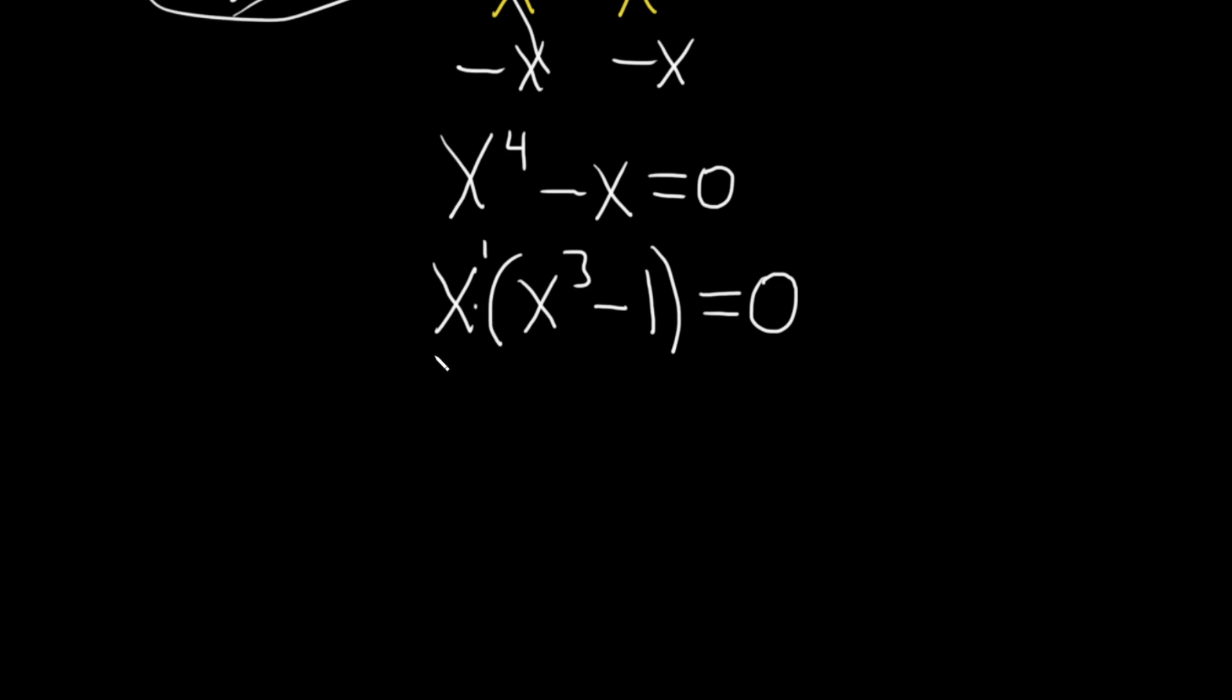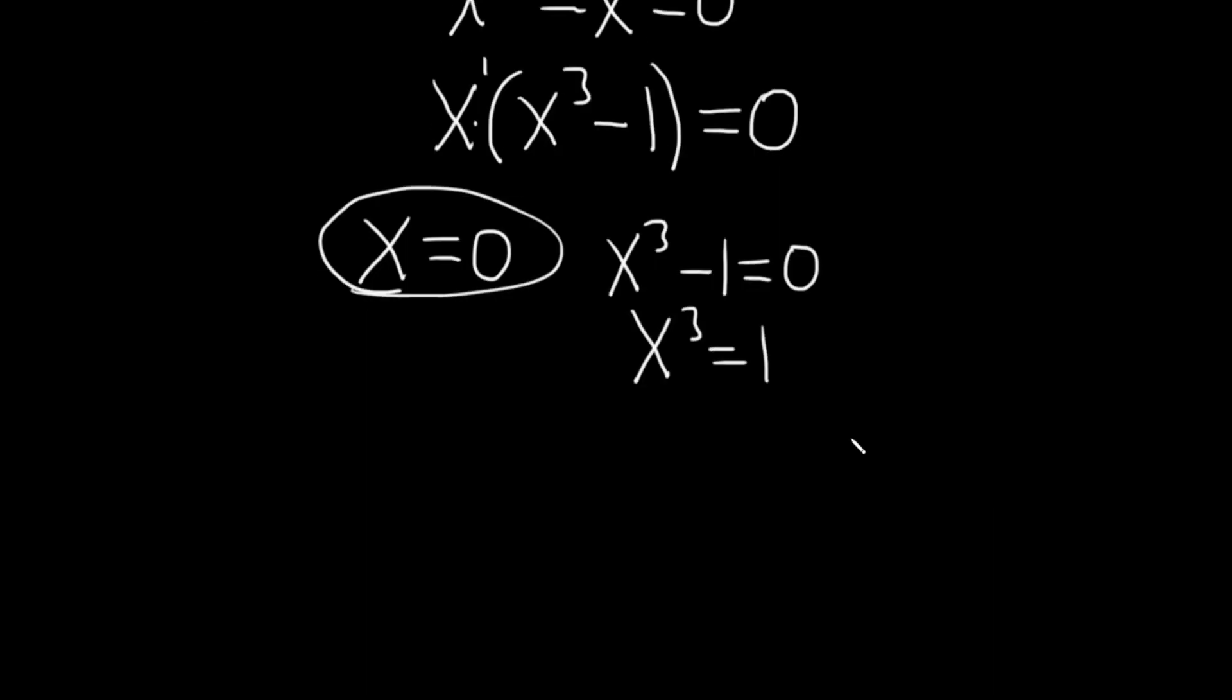So whenever you have a product equal to 0 you just set each factor equal to 0. So x equals 0 and then x cubed minus 1 equals 0. So 0 is one of our answers and then here you just add the 1. So x cubed equals 1. And then just take the cube root of both sides.